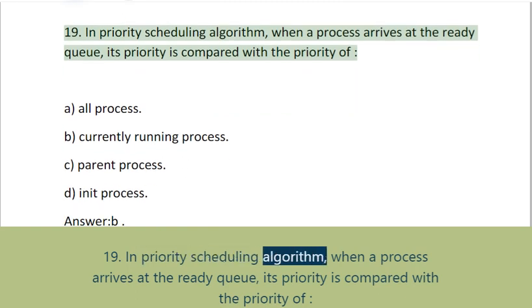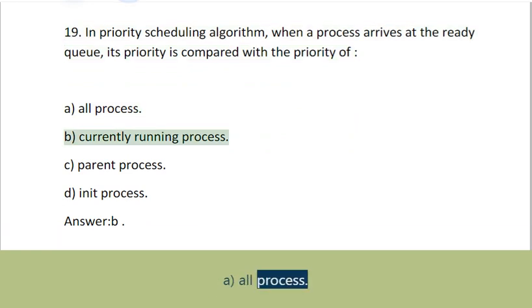Question 19: In priority scheduling algorithm, when a process arrives at the ready queue, its priority is compared with the priority of: A. All process, B. Currently running process, C. Parent process, D. Init process. Answer: B.